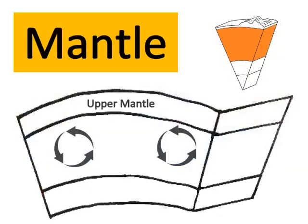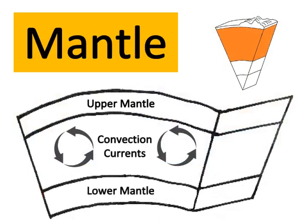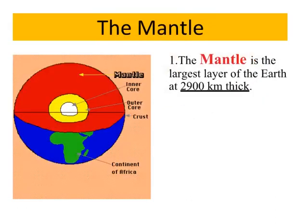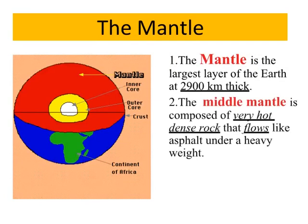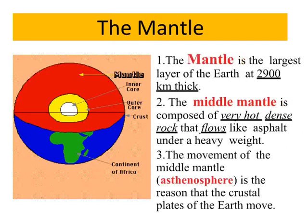The mantle has an upper mantle, convection currents, and lower mantle. The mantle is the largest layer of the Earth at 2,900 kilometers thick. The middle mantle is composed of very hot dense rock that flows like asphalt under a heavy weight. The movement of the middle mantle — the asthenosphere — is the reason that the crustal plates of the Earth move.